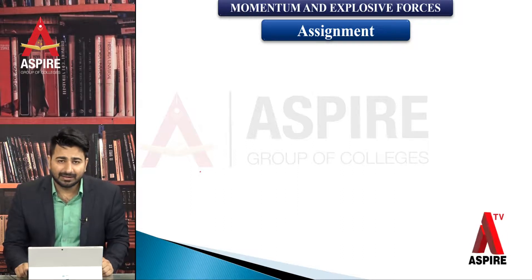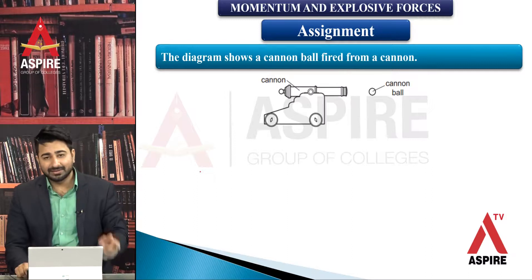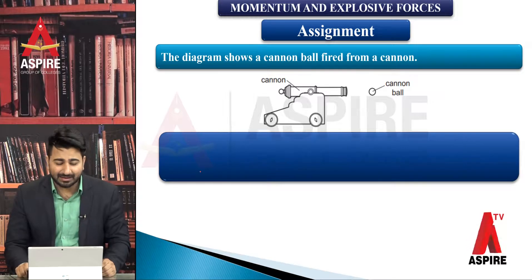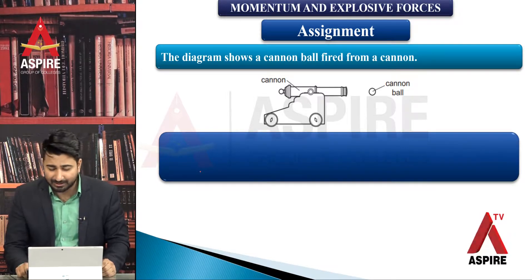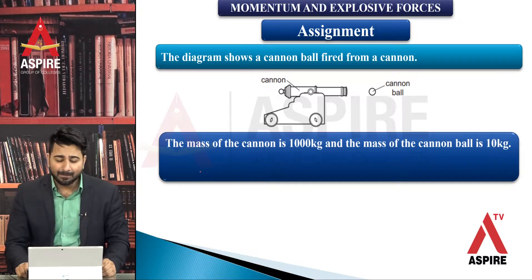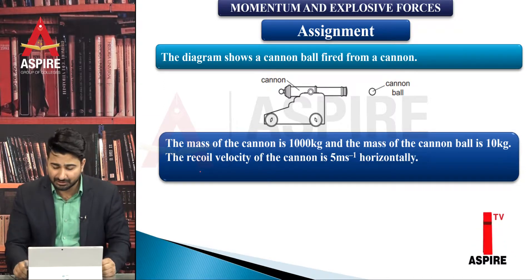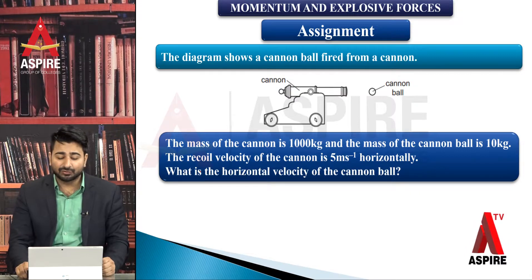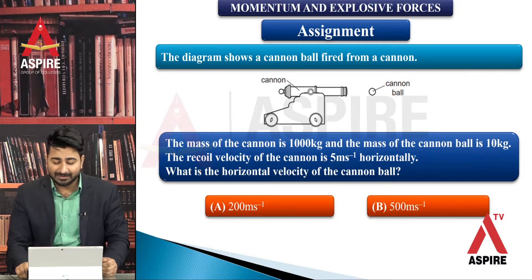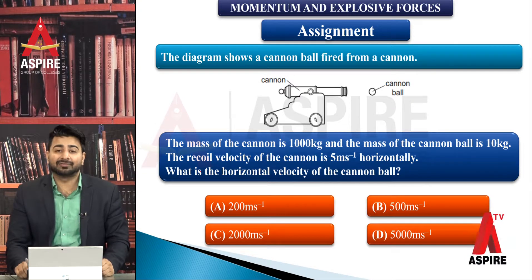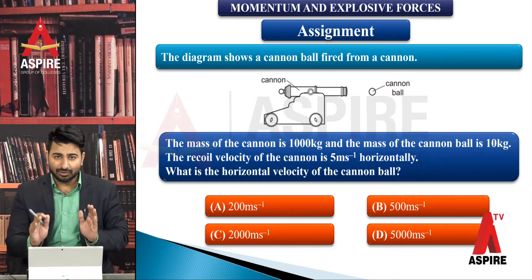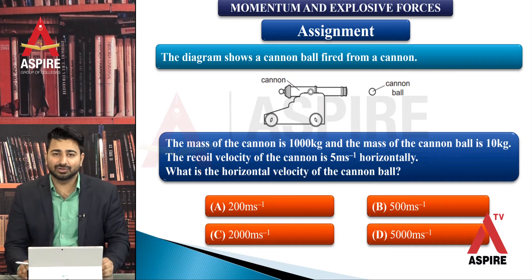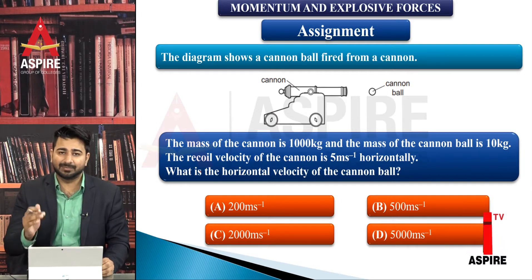Dear students, now we have an assignment in MCQ form related to firing of bullet from rifle. Like a MCQ: a cannon fires a cannon ball. The cannon has mass 1000 kg and the ball has mass 10 kg. The recoil velocity of the cannon is 5 meters per second. What would be the horizontal velocity of the cannon ball? Options are: 200, 500, 2000, or 5000 meters per second. I am confident that all attentive students will get this correct — please share your answer in the comments. In the assignment lecture we will solve it. Today's lecture concludes here. In the next lecture we will start projectile motion. Allah Nigehban.